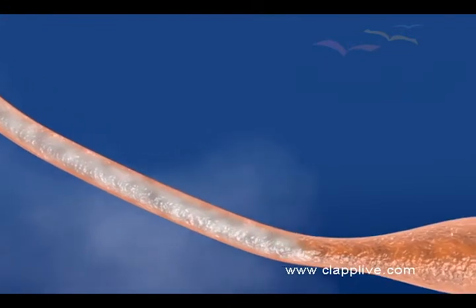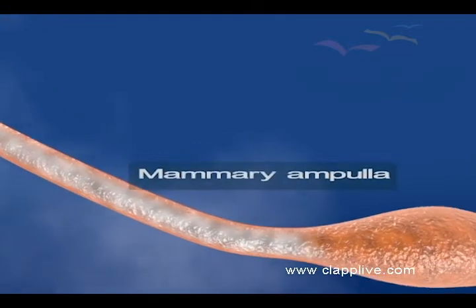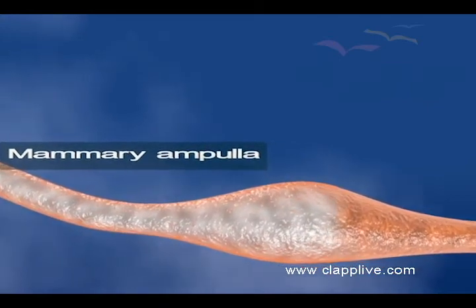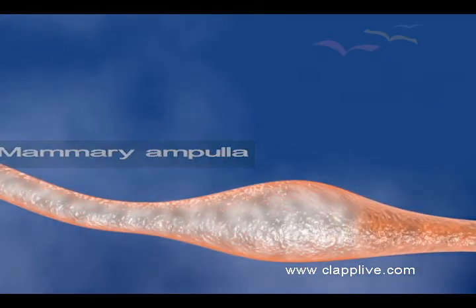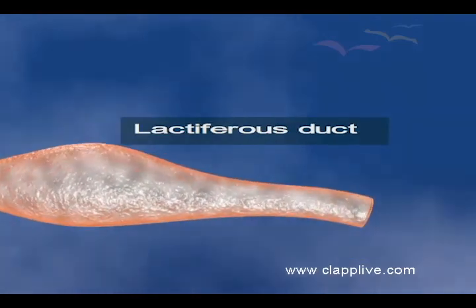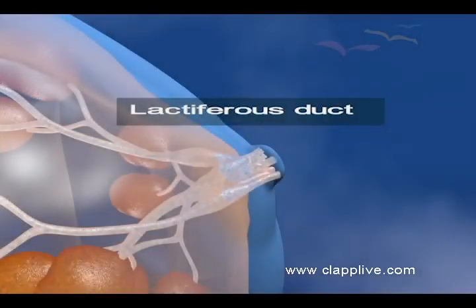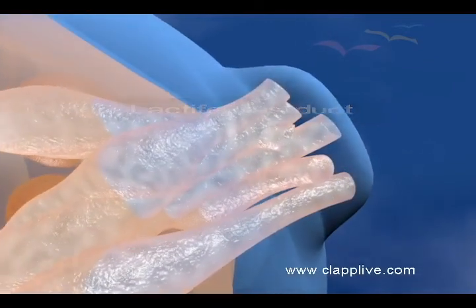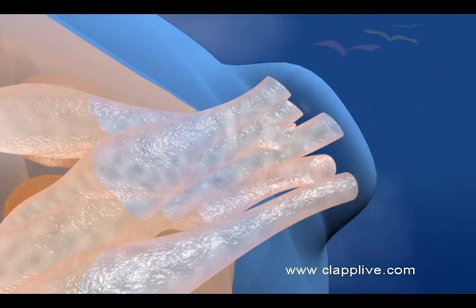The mammary ampulla, also called lactiferous sinuses, is where milk may be stored before going to the lactiferous ducts. Each lactiferous duct carries milk to the nipple. The ejection of milk is stimulated by the hormone oxytocin. A nursing woman can secrete 1 to 2 litres of milk per day.